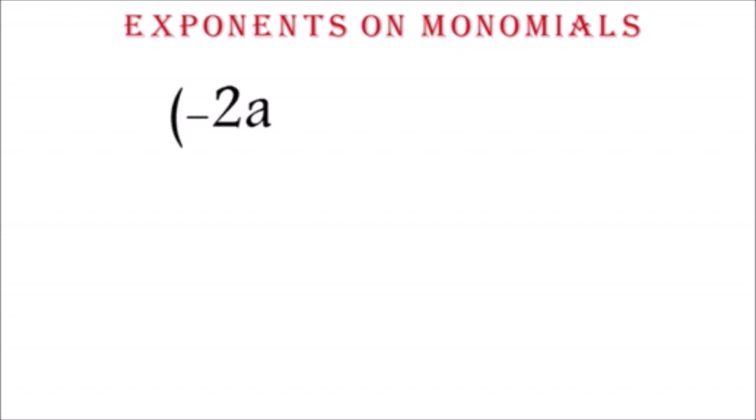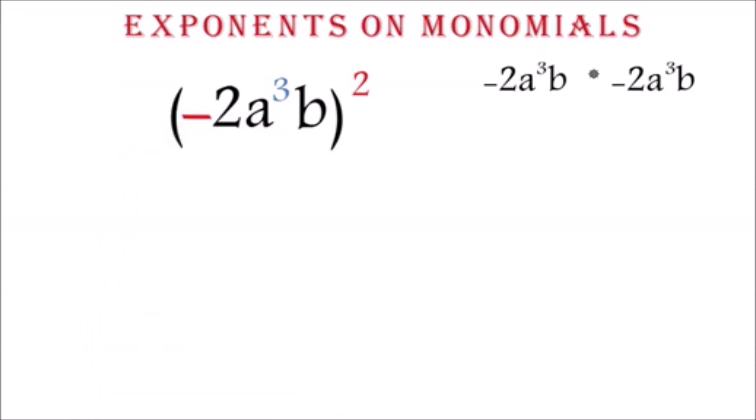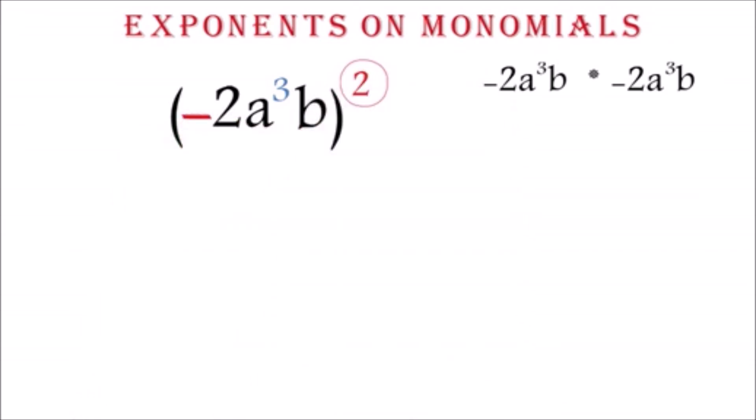Note, you can expand and do a normal multiplication on it, but that will not be the best way. The first thing you will notice is that the term is negative and the exponent is even, so the answer will be positive. We learned this earlier. Now, we will raise the coefficient to the required exponent. The coefficient here is 2, so we will raise it to the power 2. This will give us 4.